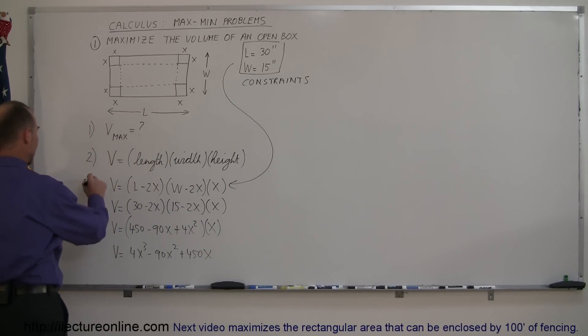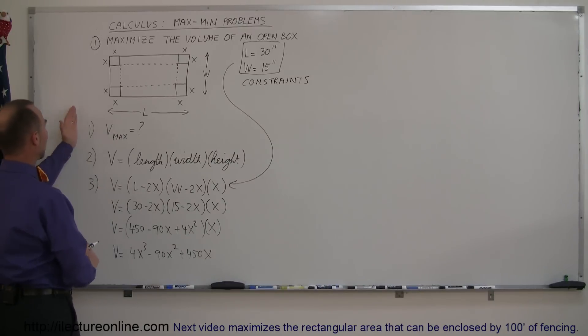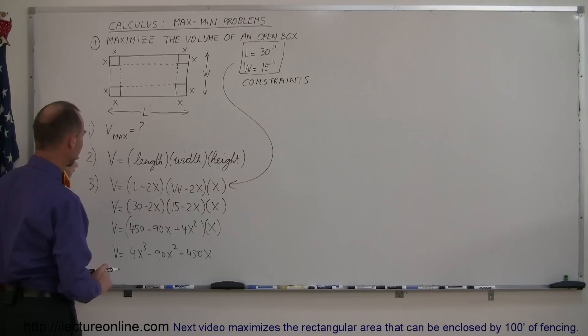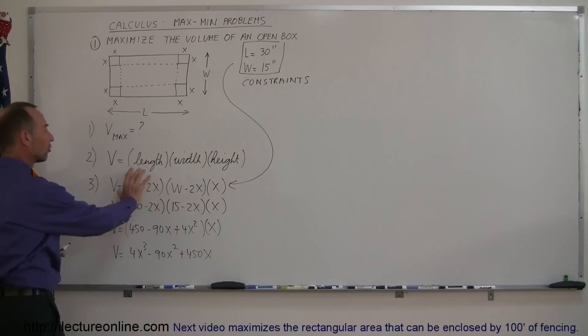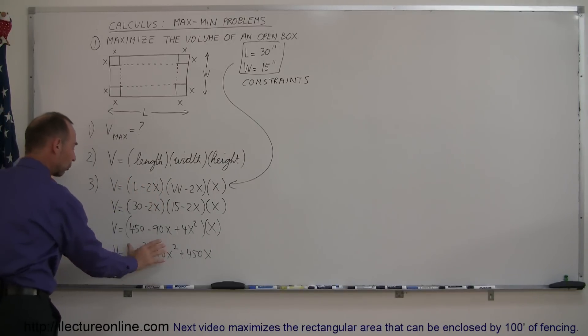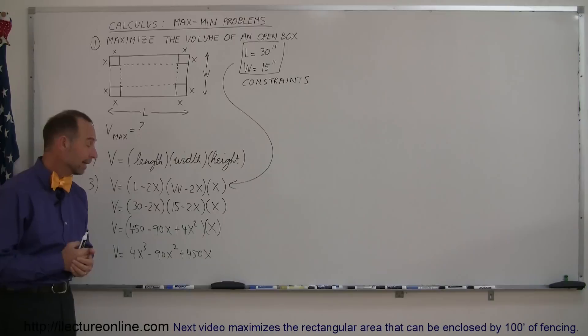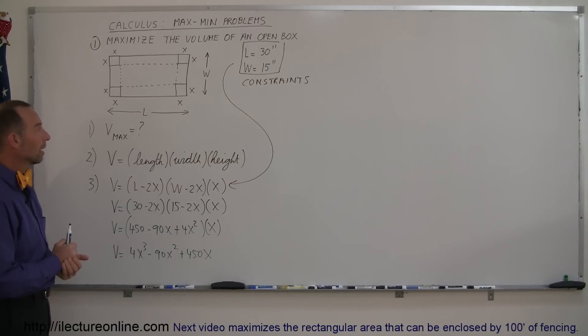Let's call this step 3. Step 1 was determining what we're trying to maximize, step 2 was coming up with an equation, and step 3 is coming up with the constraints that allow us to simplify the equation so we only have one variable, one independent variable in the equation.